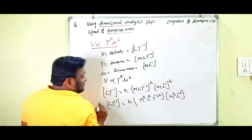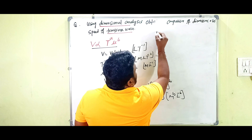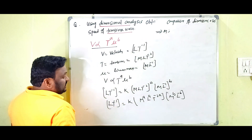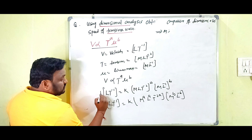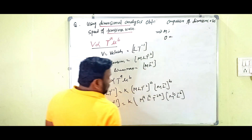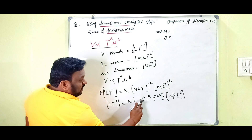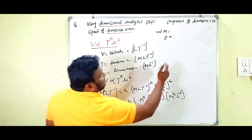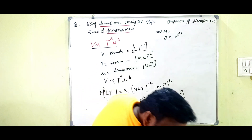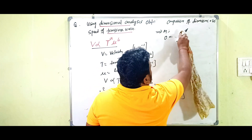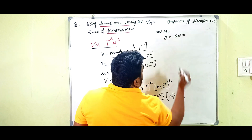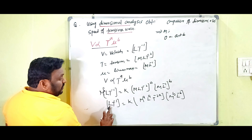First, comparing dimensions of M on both sides: on the LHS, M has power zero (M⁰), and on the RHS we have M^(a+b). So we get: 0 equals a plus b.